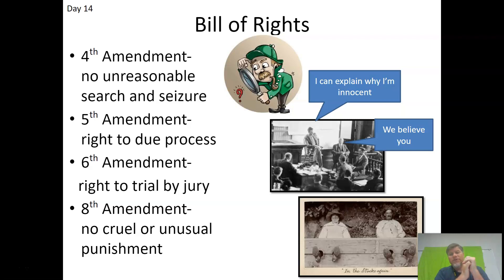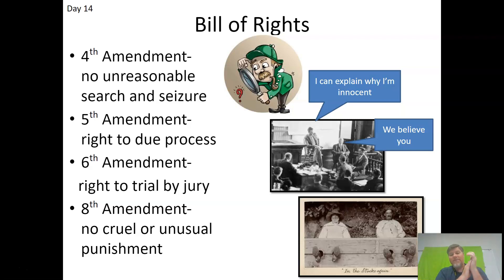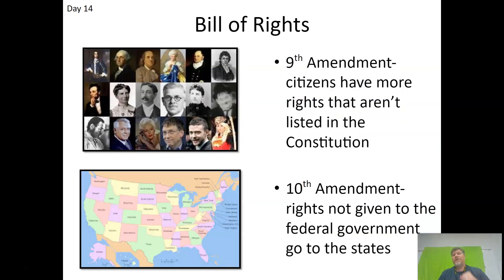There's a process they must go through to arrest, hold, and convict someone of a crime — you have rights they can't simply ignore. The Sixth Amendment gives you the right to a speedy trial by jury. The Eighth Amendment prohibits cruel and unusual punishment. The Ninth Amendment states that citizens have more rights than just those listed in the Constitution. The Tenth Amendment says rights not given to the federal government are reserved for the states.